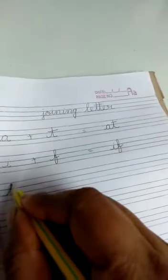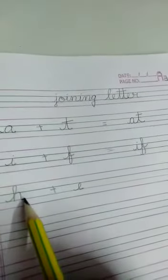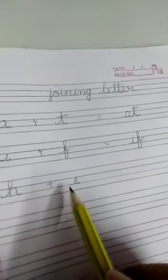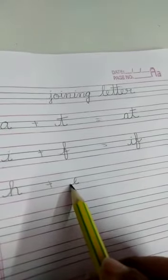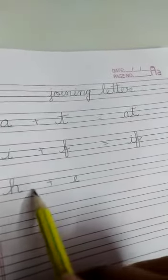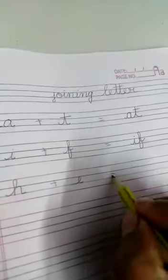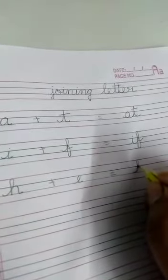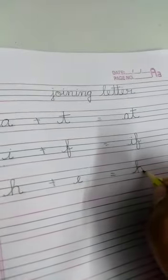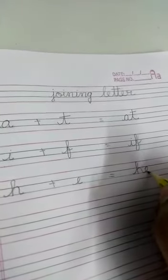Now I'm writing H and E. This is the tail of H and we have to join the E using its tail. We have to join these two tails. So write down H like this, and just continue the E from its tail. Are you seeing? Yes, this is how we have to do it.